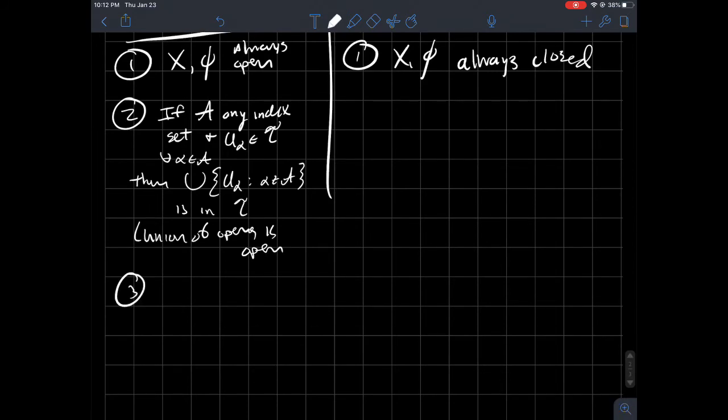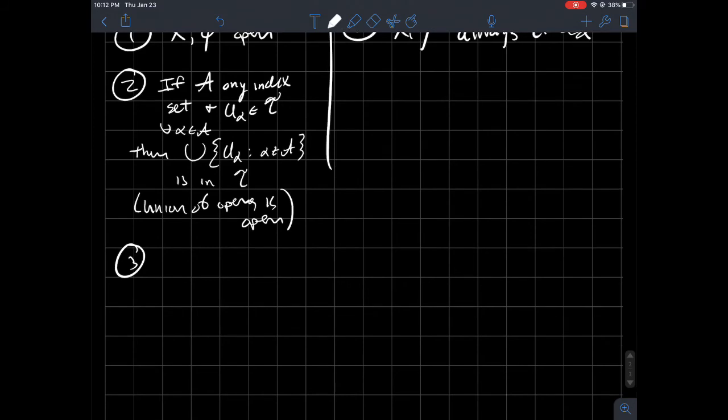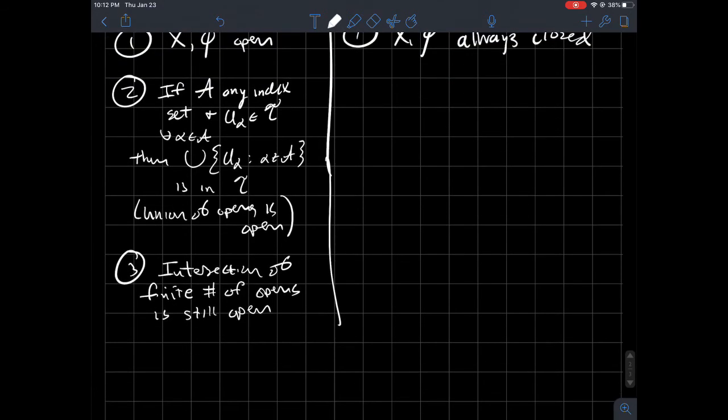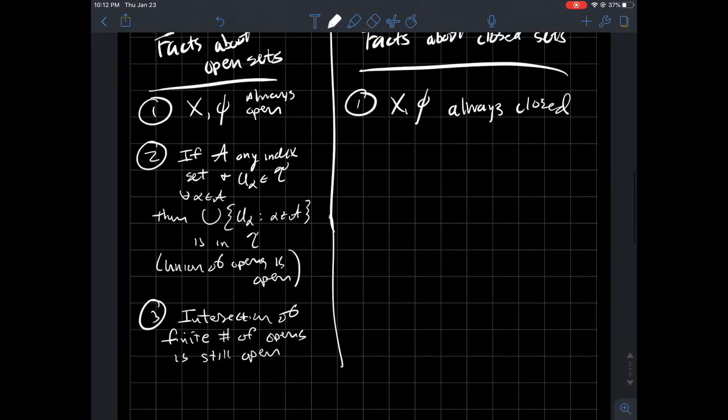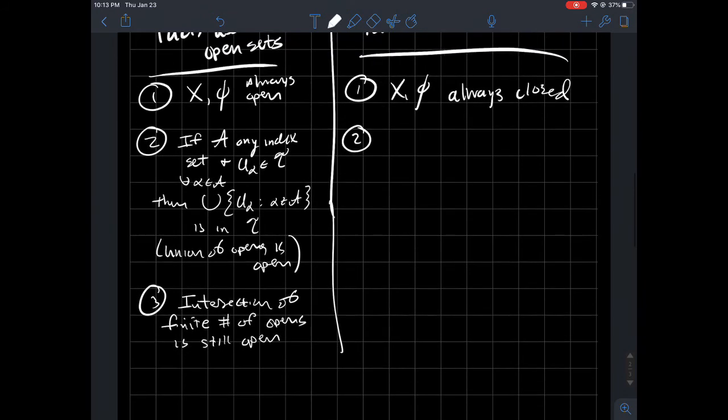And then, maybe the third thing that I want to write down is intersections for opens is not as nice. You can only intersect finitely many things at a time. And so, maybe I'll just write that in words. So, the intersection of a finite number of opens is still open. But you've got to be careful when intersecting infinitely many opens at a time. You don't necessarily get something that's open. I'll say more about that later.